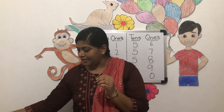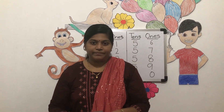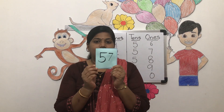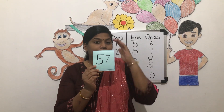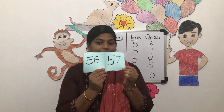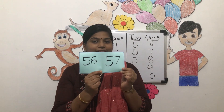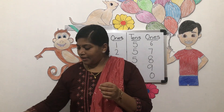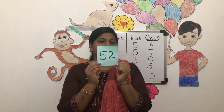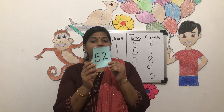Now let me ask about before numbers. Are you ready to answer? Tell me, what comes before 57? It is 56. Before 57 we have 56. Now one more — what comes before 52? It is 51.